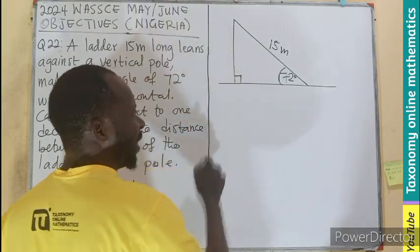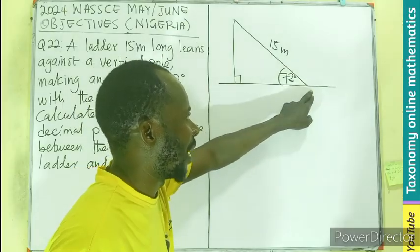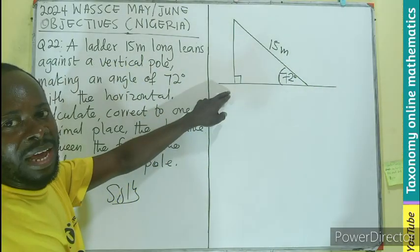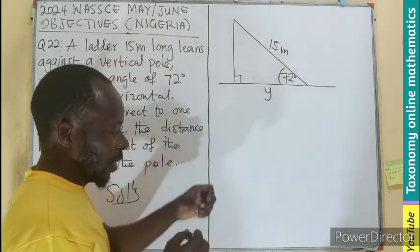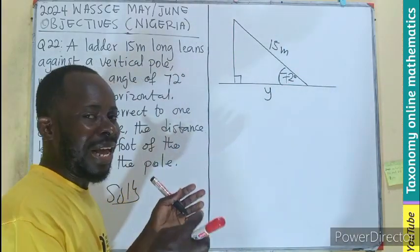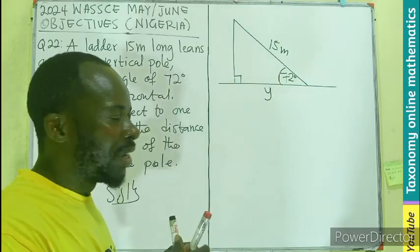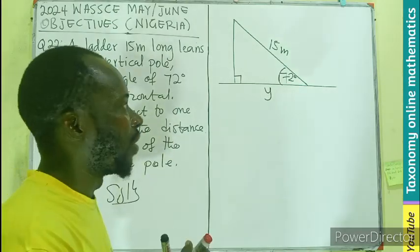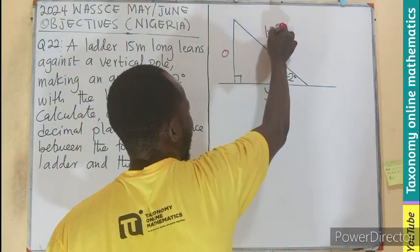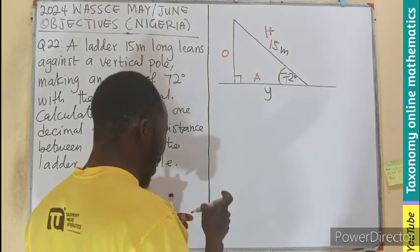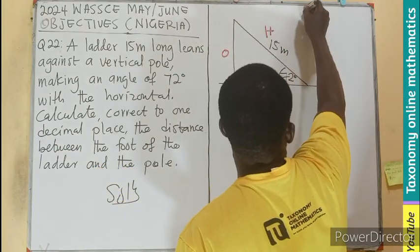The pole is perpendicular to the ground. We are asked to find the distance between the foot of the ladder and that of the pole, so let's label it as y. In trigonometry, for a right-angle triangle, we indicate the side facing the angle as the opposite, the longer side as the hypotenuse, and this one becomes the adjacent.